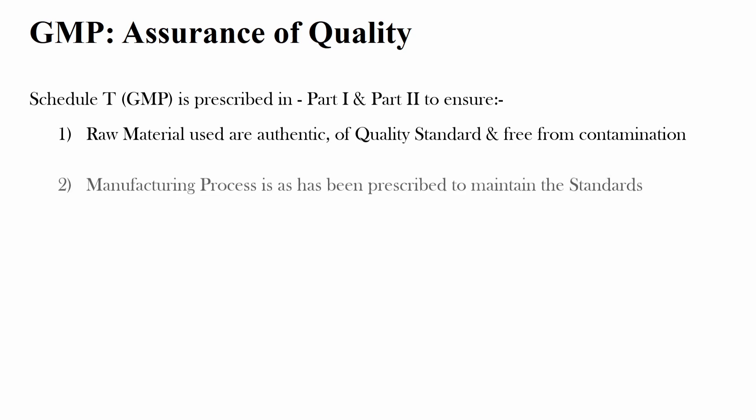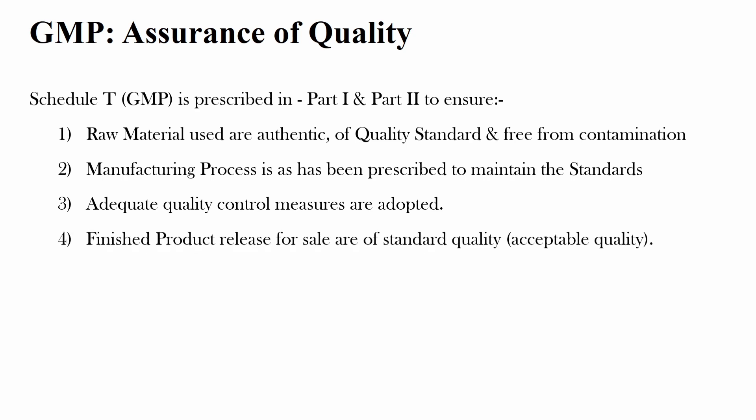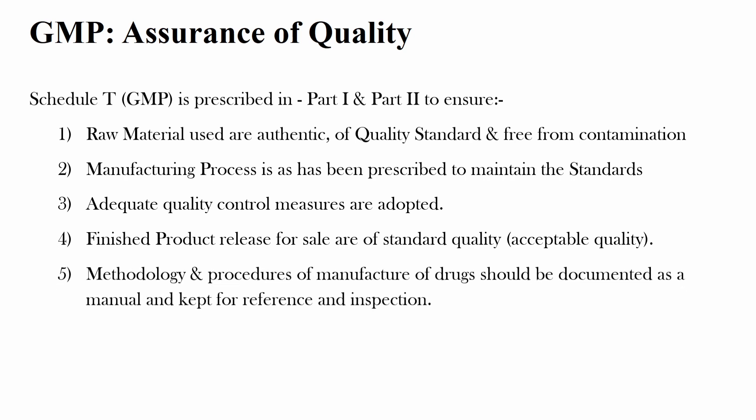Schedule T describes GMP in two parts — Part 1 and Part 2 — to ensure that raw materials used are authentic, of quality standard and free from contamination. The manufacturing process is as prescribed to maintain the standard. The finished products released for sale are of accepted quality, and the methodology and procedure of manufacture should be documented as a manual and kept for reference and inspection. By combining all these factors, it ensures the product will have quality, safety and efficacy.